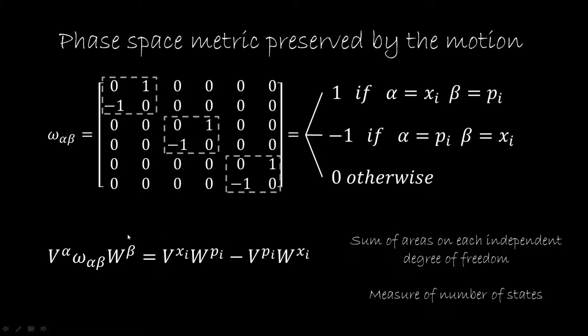So what we are basically saying is that a deterministic and reversible motion should conserve this metric — it should conserve our measure for the number of states. If we impose the conservation of this metric during the evolution, we expect to find Hamilton's equations. Let's see if we can actually do that.